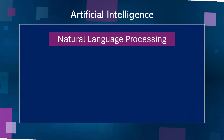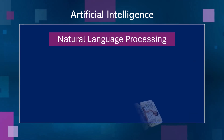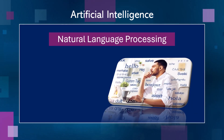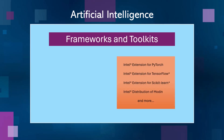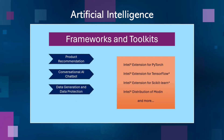There are some cool natural language processing or NLP projects available in the repo, including a Python-based language identification sample optimized with the Intel extension for PyTorch and the Intel neural compressor. Moreover, the frameworks and toolkits category includes several projects for solutions such as product recommendation, chatbots, data generation and data protection, and engineering design optimizations powered by AI tools from Intel.